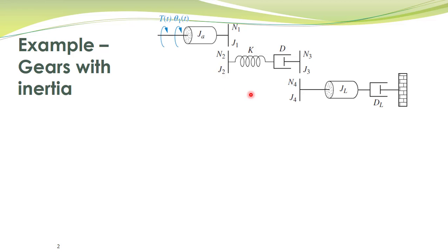Our next example is the mechanical system shown in this schematic diagram. A torque T is applied to this shaft which produces angular displacement theta one of t. This shaft is connected through a gear to another arrangement, and then connected to another gear. Here the gears are not ideal gears — they have moment of inertia. For example, this pulley has moment of inertia J1, this one has J2, this pulley has J3, and this pulley has moment of inertia J4.